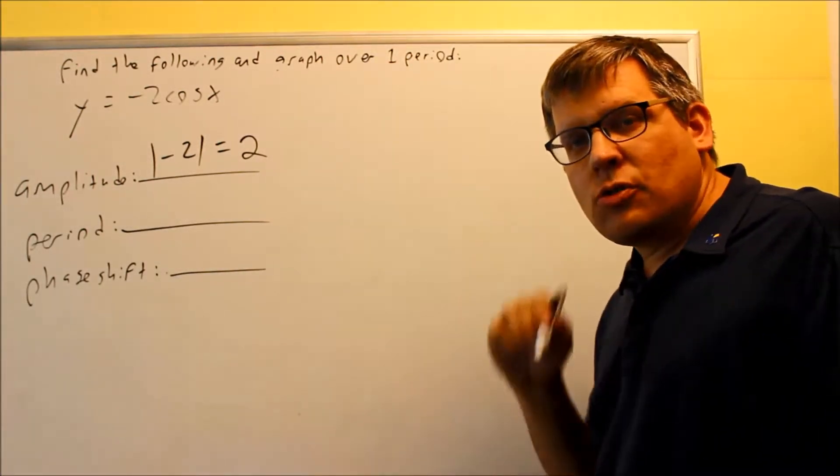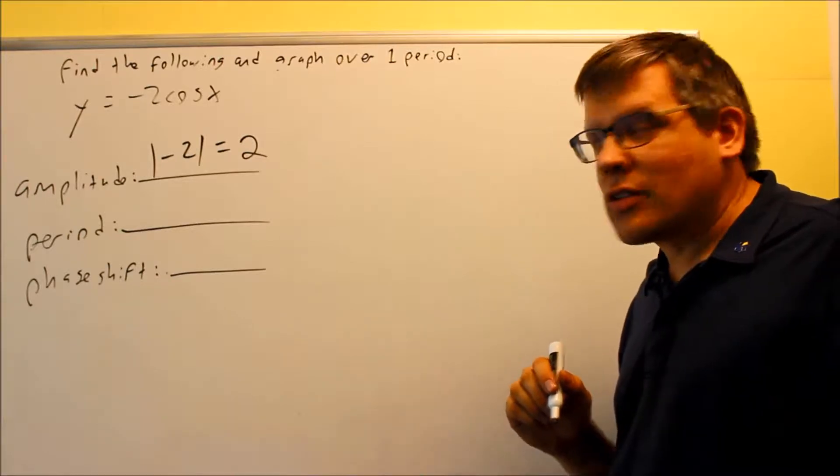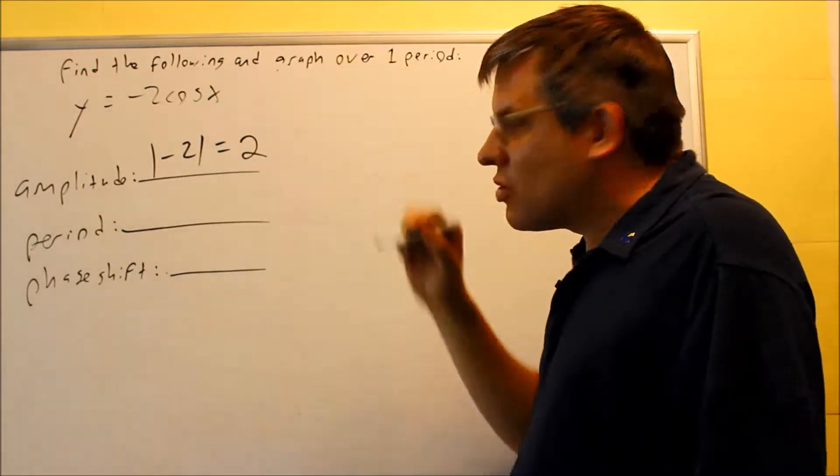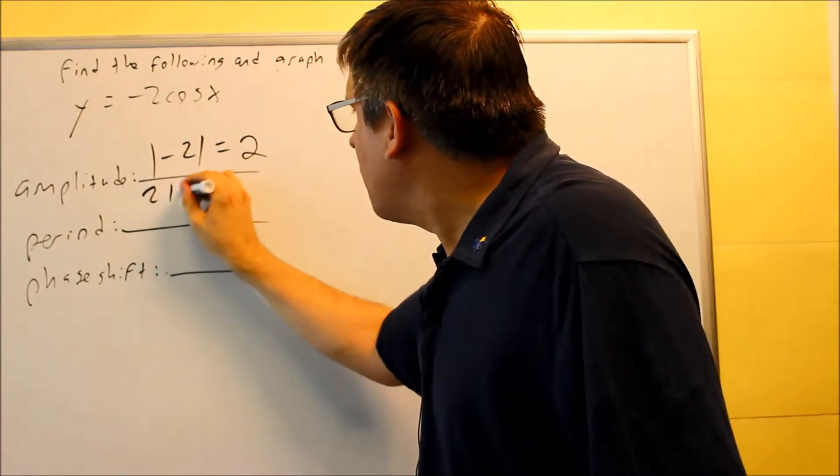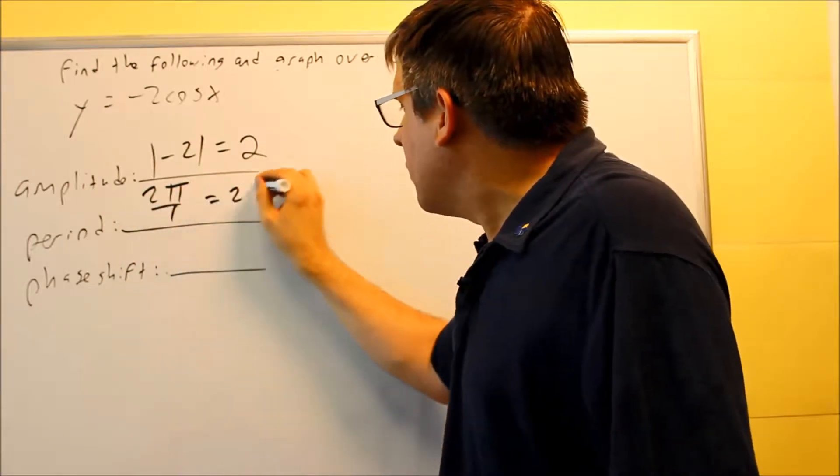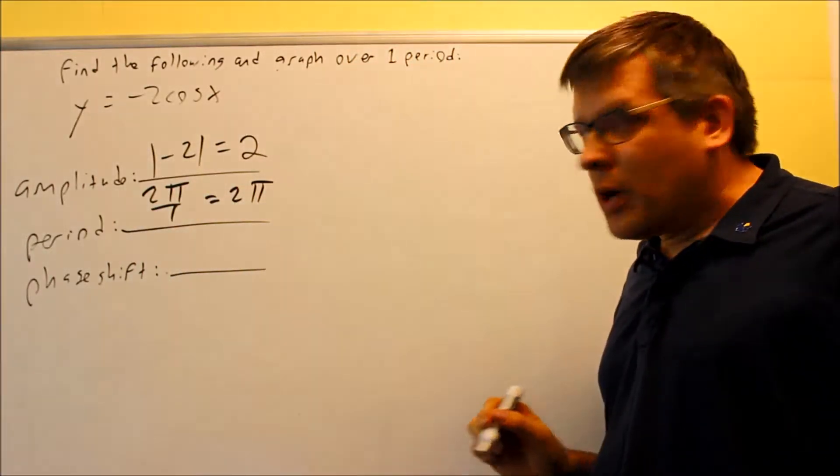Your period, the formula is always 2 pi divided by the number in front of the x. In this case, the number in front of the x is 1, so I have 2 pi divided by 1, and that's equal to 2 pi.